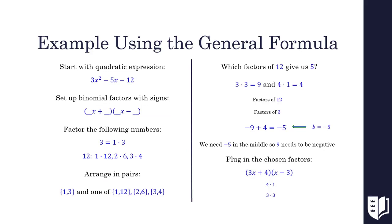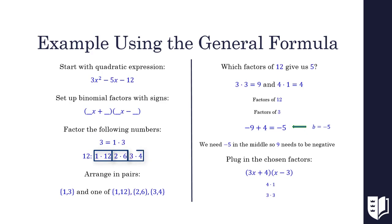Now let's use the general formula to complete the following problem. We start with the quadratic expression 3x squared minus 5x minus 12. First, we want to set up the signs: we know that one will be positive and the other will be negative because our quadratic's middle and last terms are both negative. Next, we need to factor our a and c, which are 3 and 12 in this problem. Three factors to 1 times 3, and 12 can factor to 1 times 12, 2 times 6, or 3 times 4. We need to find two pairs of factors, one from each number, because we have four slots to fill. We only have one pair of factors for 3, so we know we will have a 3 as the coefficient of one x and a 1 as the coefficient of the other x.